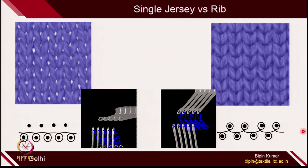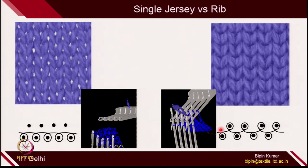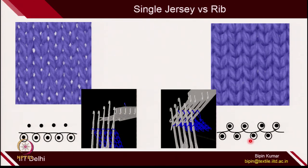I have already introduced rib, where in the same course you have technical front and back loops. On the machines we can create rib design very simply — this can be created on a manual V bed machine also. Single jersey fabrics have loops created on one bed, and double jersey fabrics have loops created on both beds. The double jersey fabric is very dense because you have multiple loops on the front and back side. This is how you create single jersey fabric and rib structure on the machine.